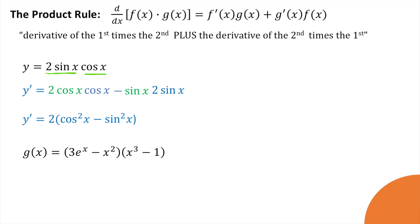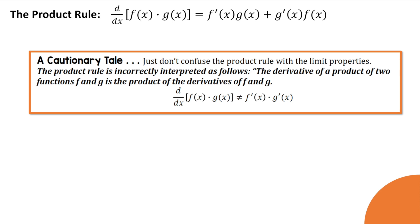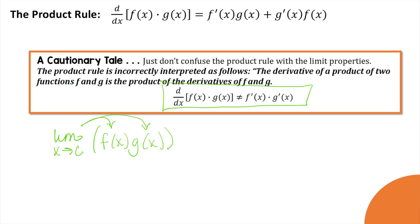Pause the video and see if you can do this next one on your own. Just a reminder: the derivative of e to the x is e to the x. Compare your answer with mine — derivative of the first times the second, plus derivative of the second times the first. Now be careful: don't confuse the product rule with limit properties. With limits you could distribute through a product, but you cannot do that with derivatives. You must use derivative of the first times the second, plus derivative of the second times the first.